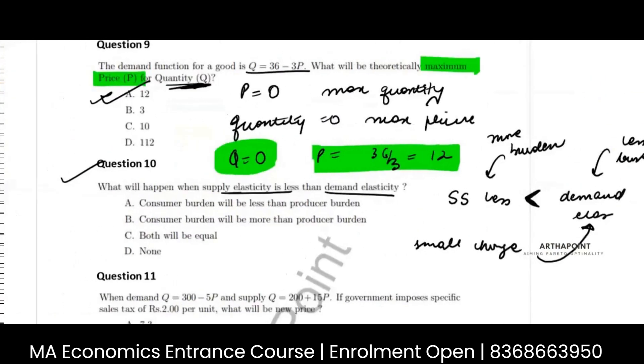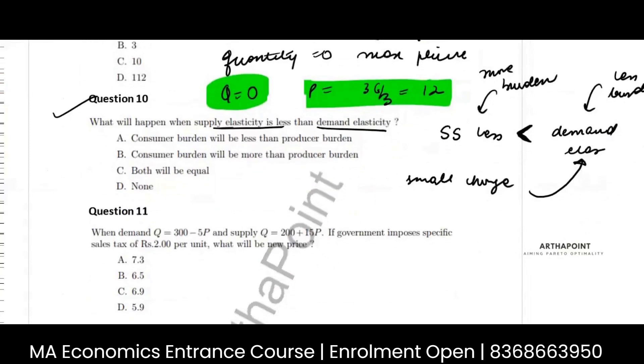So, coming back to this question, if you have more elasticity, then you will bear less burden of the tax. So, the answer is A.